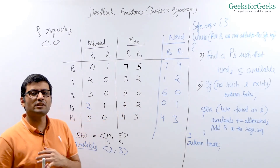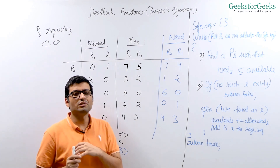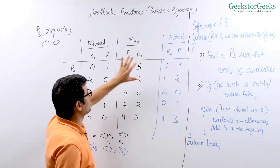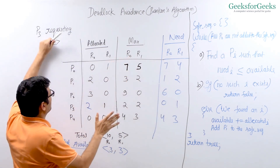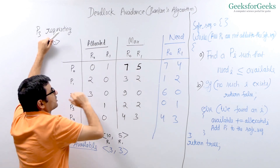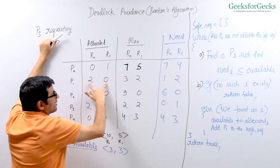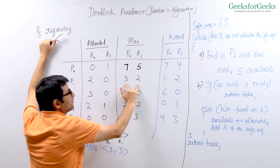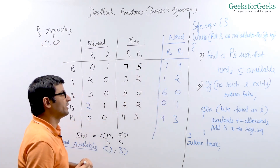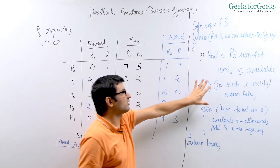To find out if a safe sequence exists, the first thing we do is build the need matrix. We simply subtract allocated from the max. So subtracting allocation (0, 1) from max (7, 5) gives need (7, 4) for P0. Subtracting (2, 0) from (3, 2) gives need (1, 2) for P1. Similarly we get the other entries of the need matrix. Once the need matrix is computed, we run the algorithm.